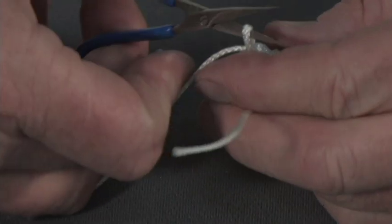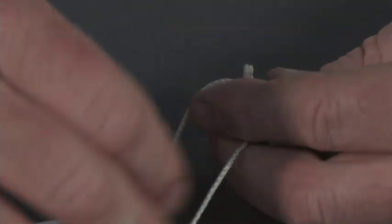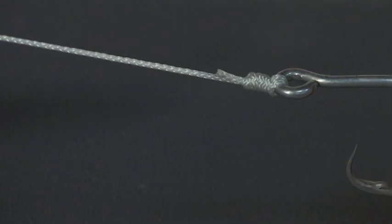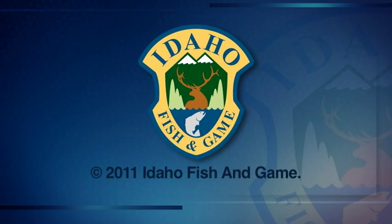Then you can cut the tag end of your line off to whatever length you like, and there's your uni knot.